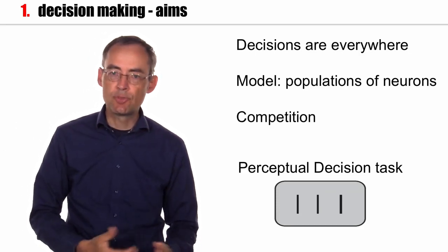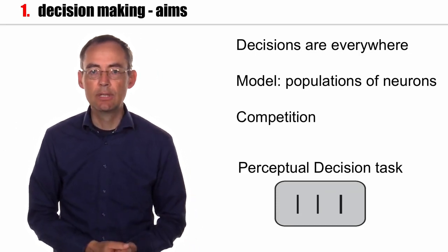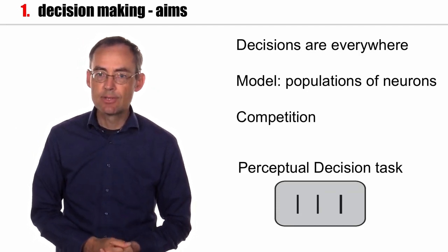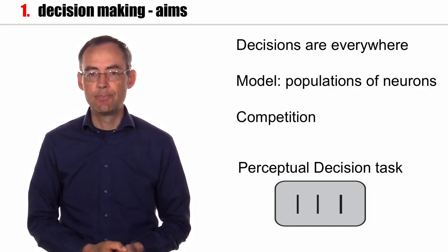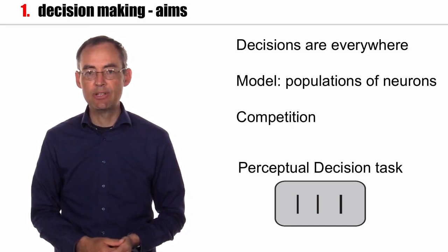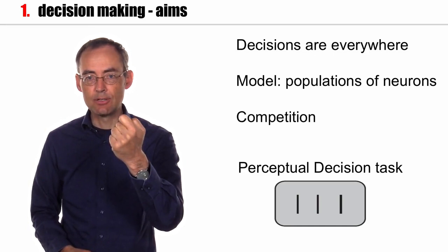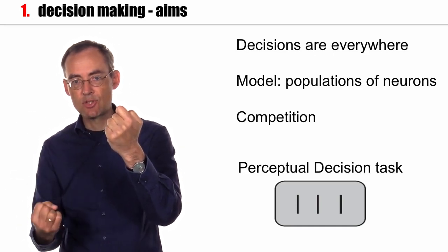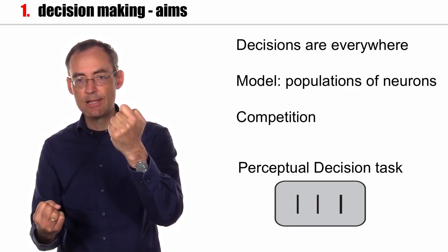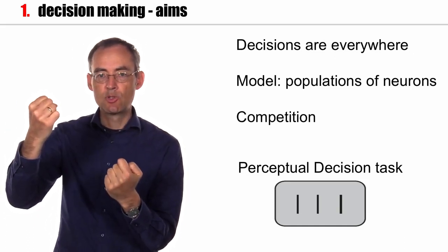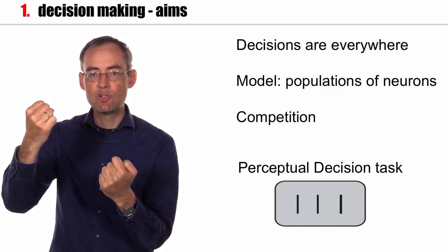To summarize, there are all sorts of decisions. Decisions are everywhere. And we are going to model these decisions by using populations of neurons. And these populations of neurons will interact. So if a first population is very active, it will effectively suppress a second population. On the other hand, if the second population is active, it will suppress the first one. So the two populations are in competition with each other.